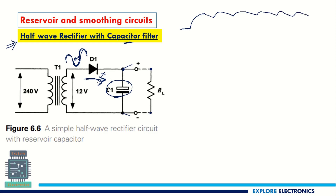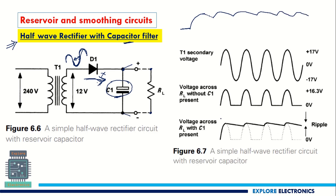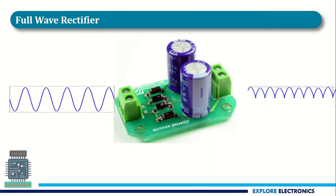Comparing the outputs: without a capacitor filter, we get the pulsating waveform. With the capacitor filter, once charged to the peak, the capacitor maintains its state with only a slight discharge, producing a smooth output. This is why a capacitor filter is required in the rectifier — to eliminate the ripples present in the output.